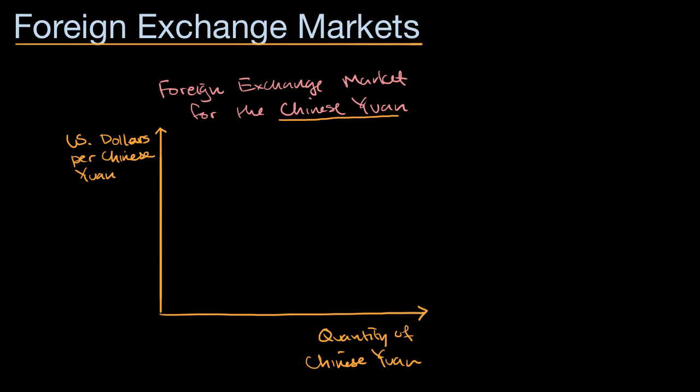Let's think about the supply and demand curves and which way they would work. Imagine that people are offering very few US dollars per Chinese yuan. In that world, a lot of people might not want to convert their yuan into dollars — they might not offer them up for supply to be converted into US dollars. So the quantity of Chinese yuan supplied, if the price for the Chinese yuan is low, might be pretty low. And as the price people are willing to pay in terms of dollars goes up, more and more people might be willing to transact. So our supply curve for Chinese yuan is likely to increase as people are willing to pay more for those yuan.